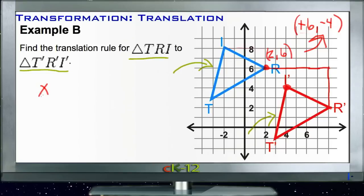We write that as: take your original (x, y) coordinate and translate it by (x + 6, y - 4) to get your new point. We can apply that to T and we'll get the same result.